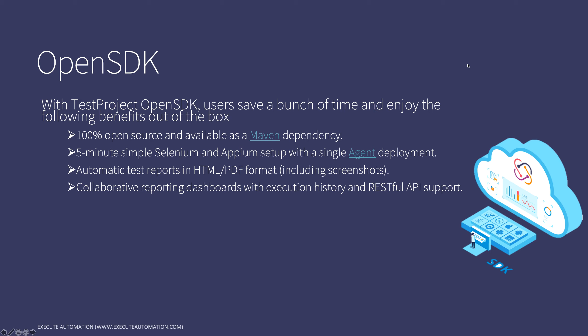Everything is handled automatically using the automatic test reporting features of this open SDK, along with a collaborative reporting dashboard with execution history and RESTful API support. You can get reports from the RESTful APIs provided by TestProject's API platform. It's also always up to date with the latest stable Selenium driver version — you don't have to change the ChromeDriver or GeckoDriver version when your browser version changes, because the TestProject agent keeps everything up to date.